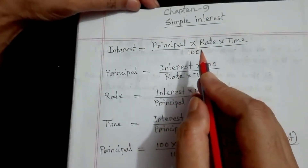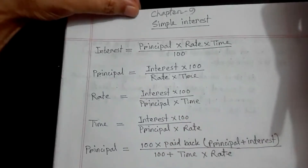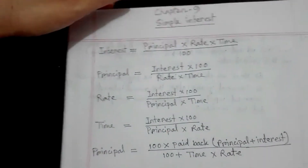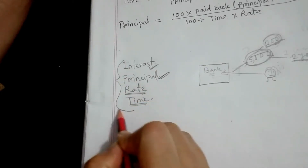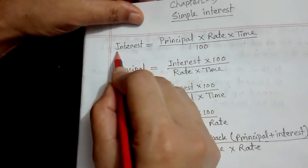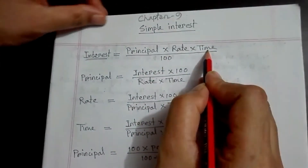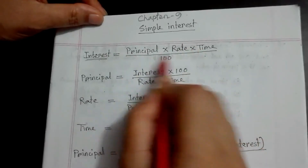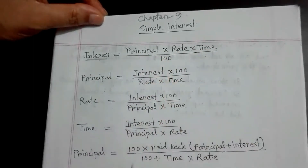Now we have a formula that we need to solve. This is the interest formula: principal, rate, time — Interest equals principal into rate into time, divided by 100.